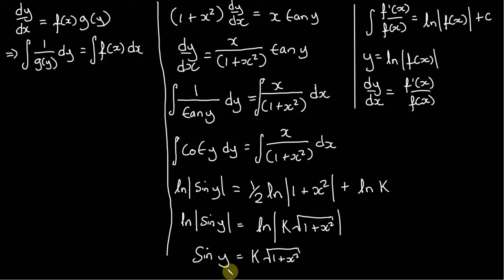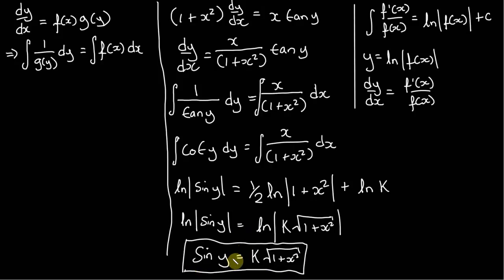There's nothing really else that we can do here — this is perfectly fine, and this is the general solution. Note that you can find particular solutions in certain cases where you're given boundary conditions. In this case we're not given a boundary condition, so we can only find the general solution.